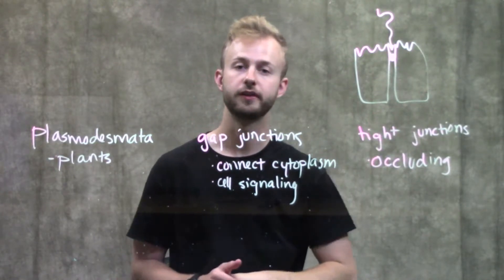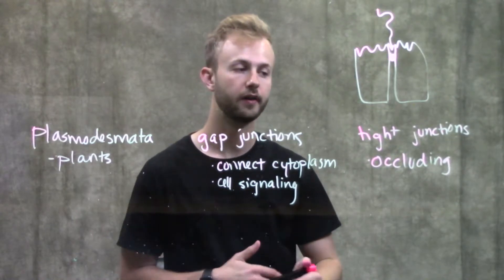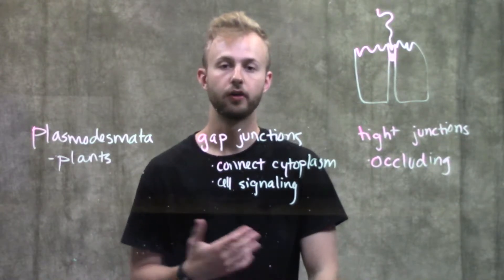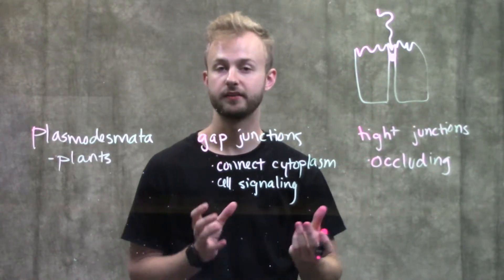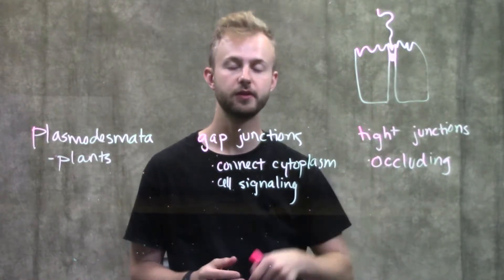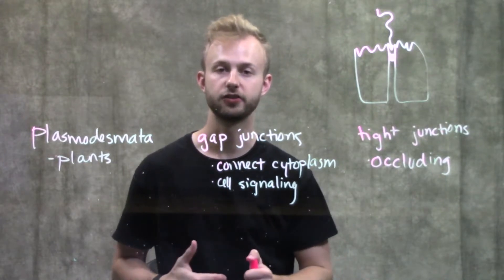This is really important in things like our intestines when we don't want bacteria or anything to pass in between our epithelial cells in a way that's not regulated. That's the biggest purpose of a tight junction.